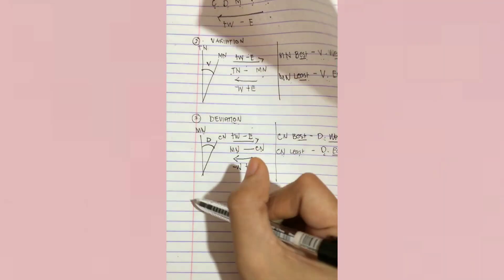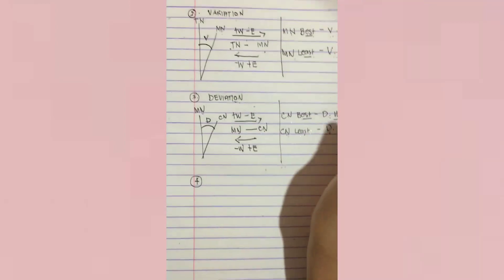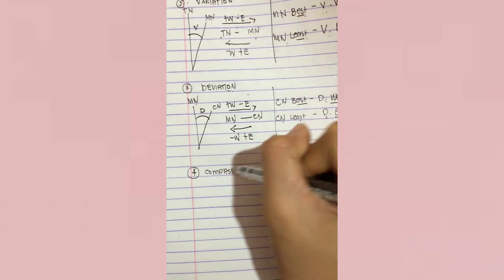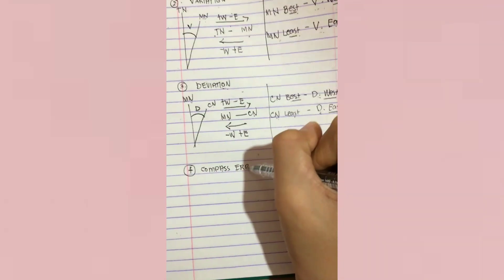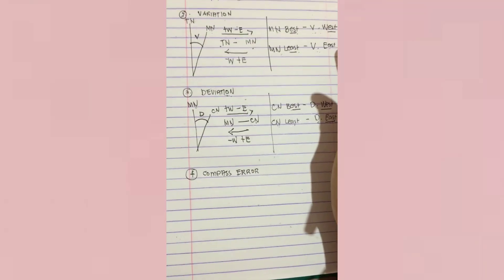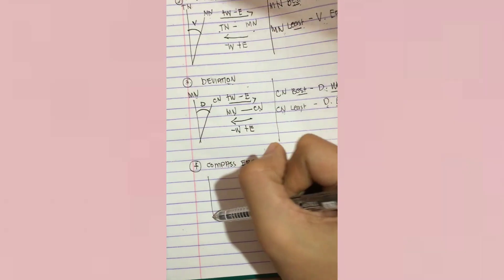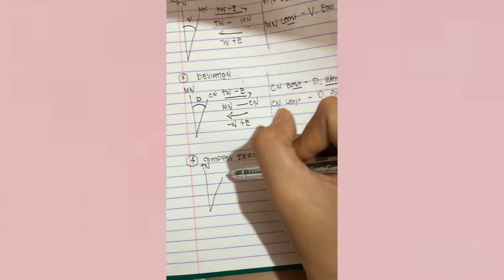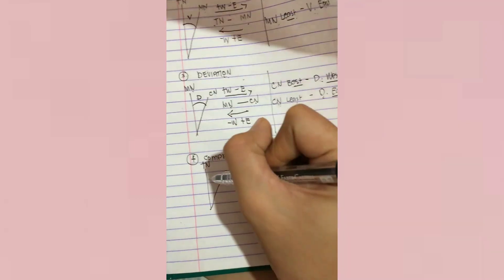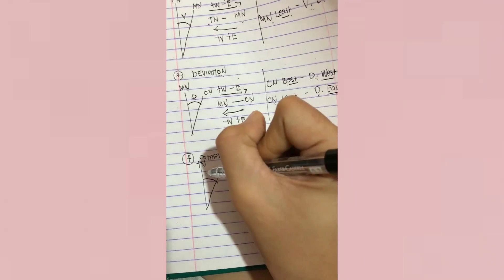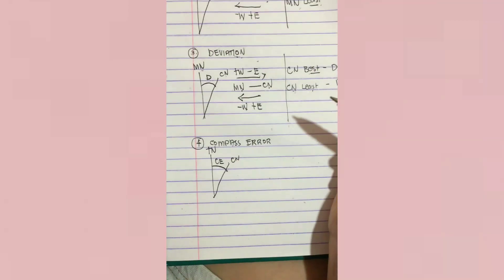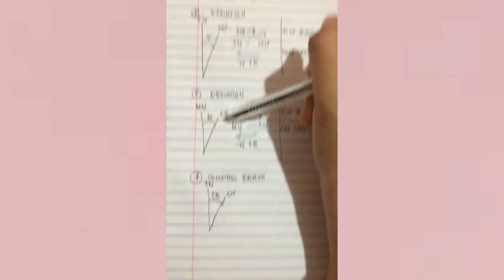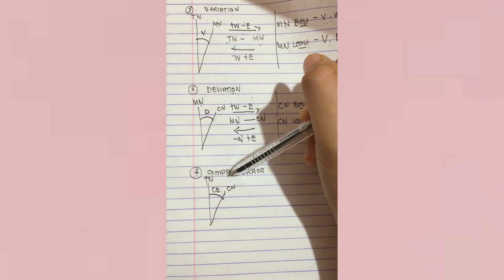The fourth rule is about compass error. Compass error is the angle between the true north and the compass north. The combination of our variation and our deviation is what we call the compass error.